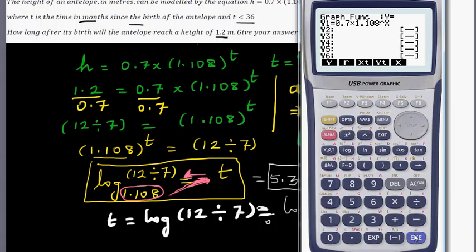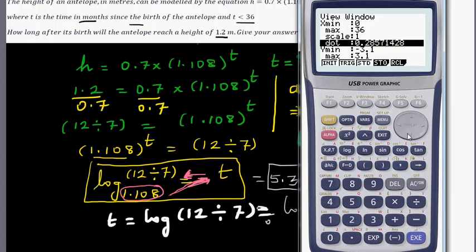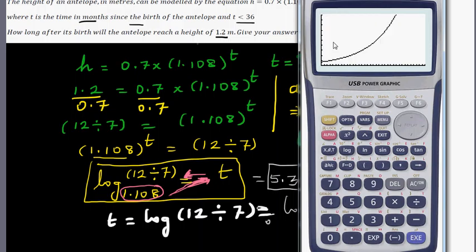I'll go on the x-axis from 0 to 36, because that's your t. And on y, I'll go from 0 to 10. Y minimum is 0 and y maximum is 10. So this is the graph.